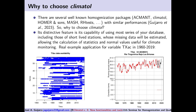This is a real example application for variable TXAC from 1960 to 2019. You can see this is a real case with many series that are very short — for example, series number 52. After having applied the homogenization function of the Climatol package, the original data in black at the end of the period has been reconstructed backwards and you have a whole series, estimated as a function of the data around that station. The same happens with all the other series.